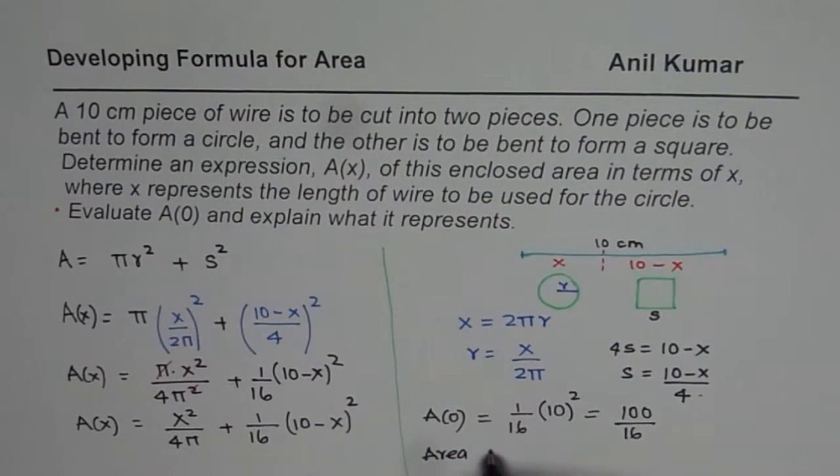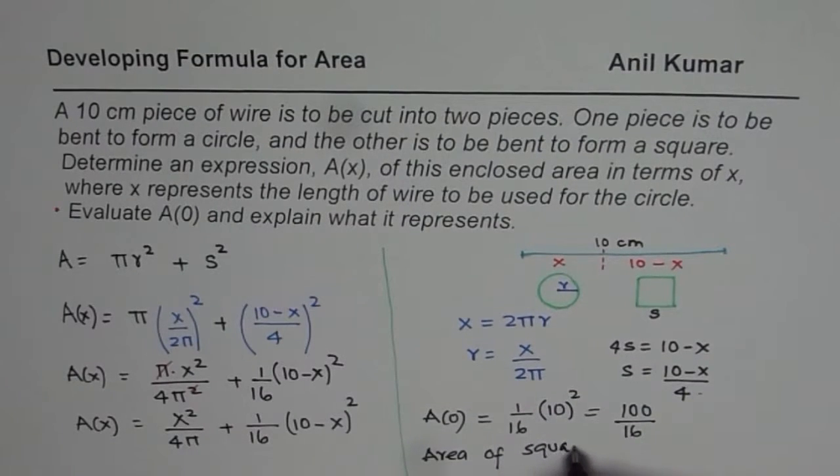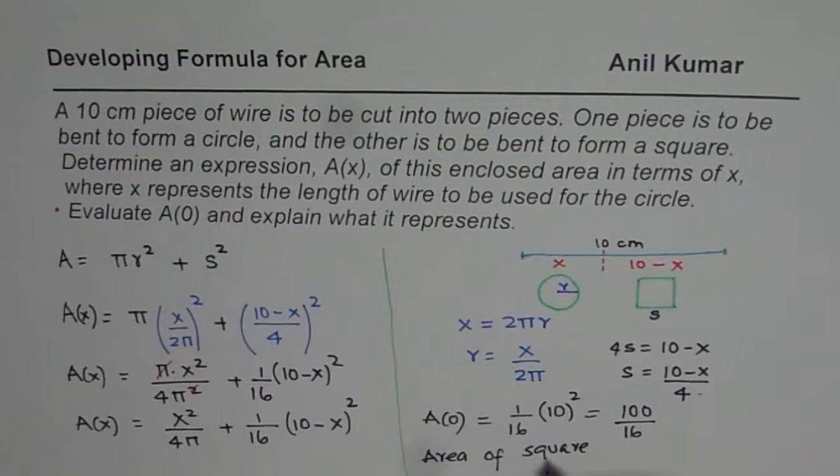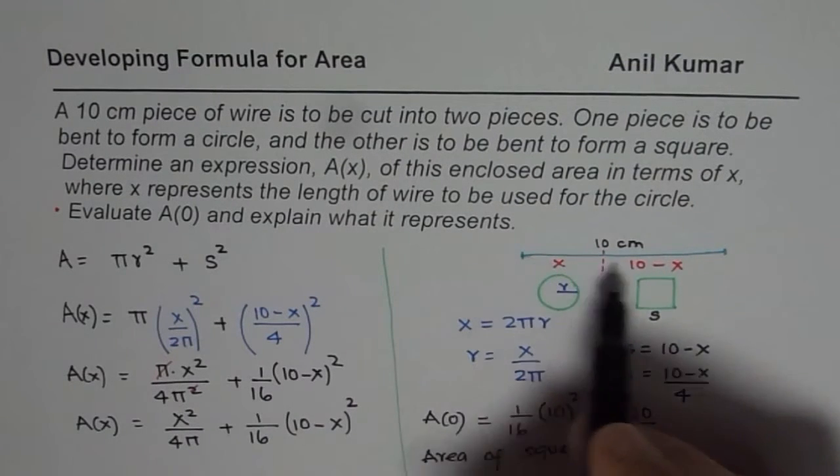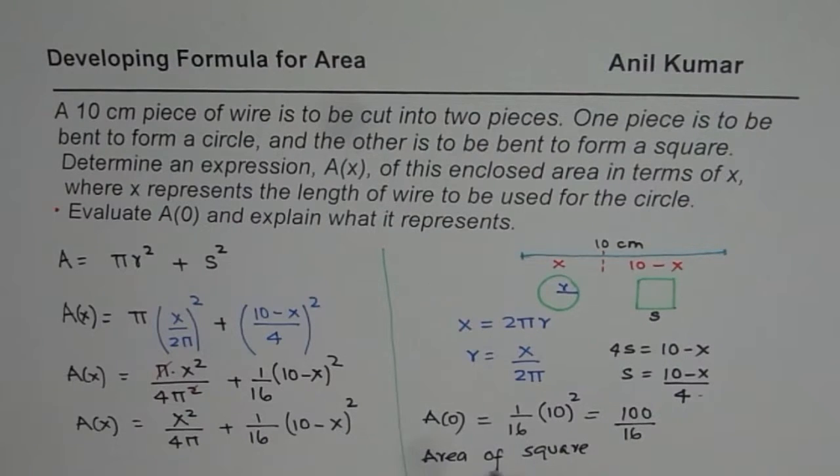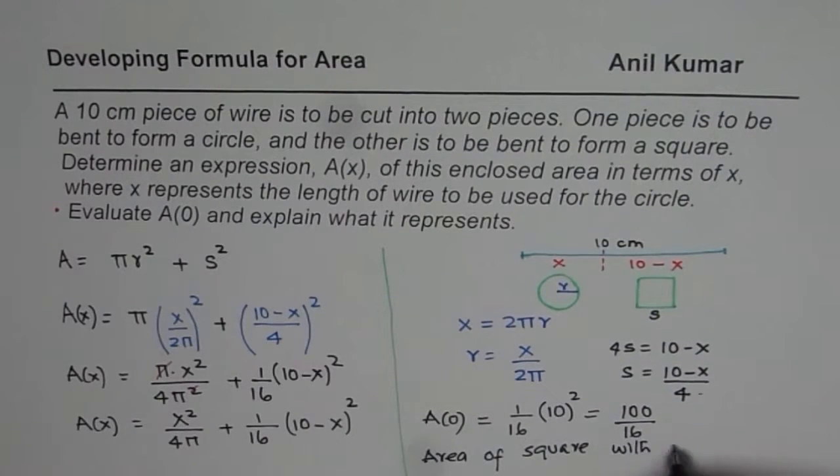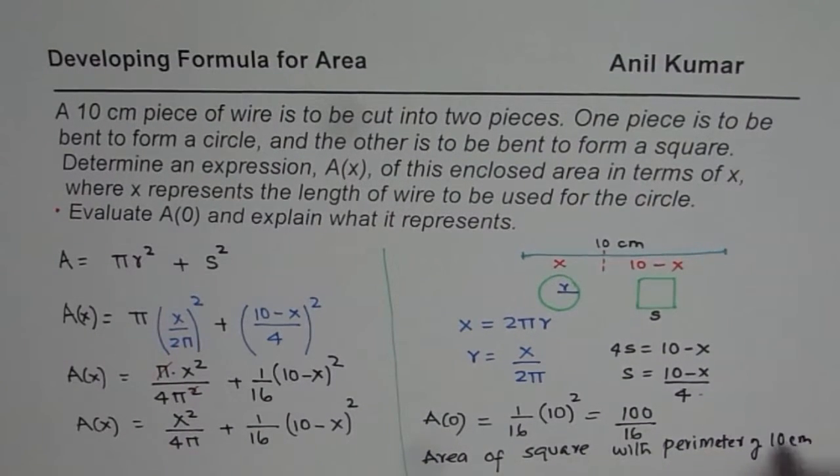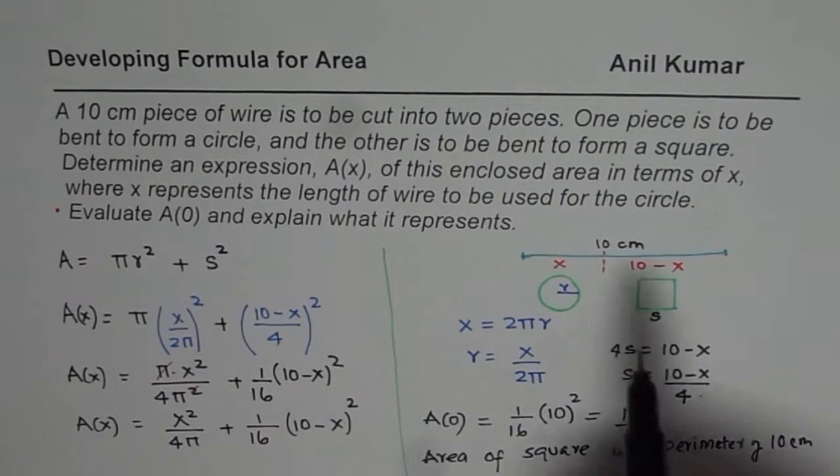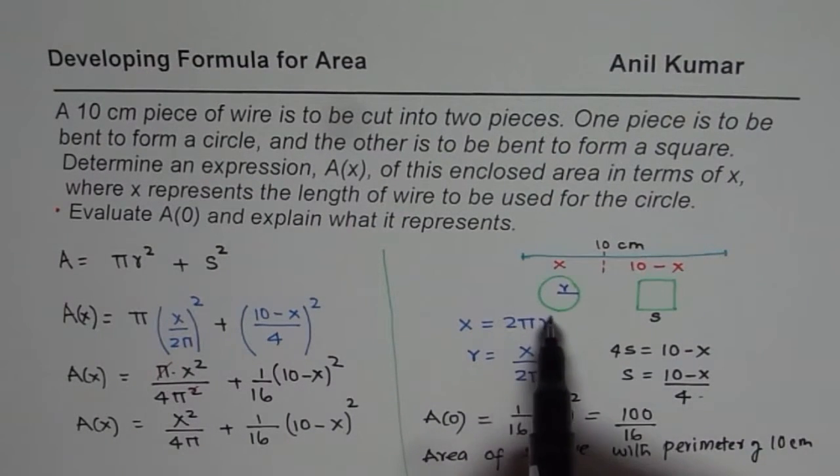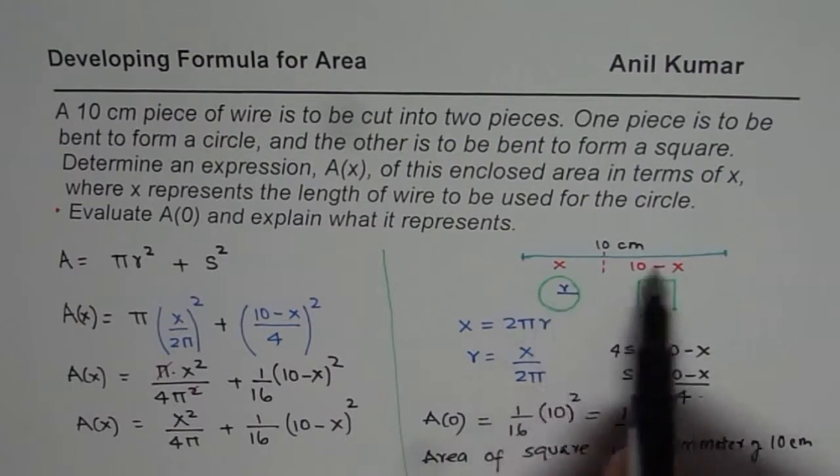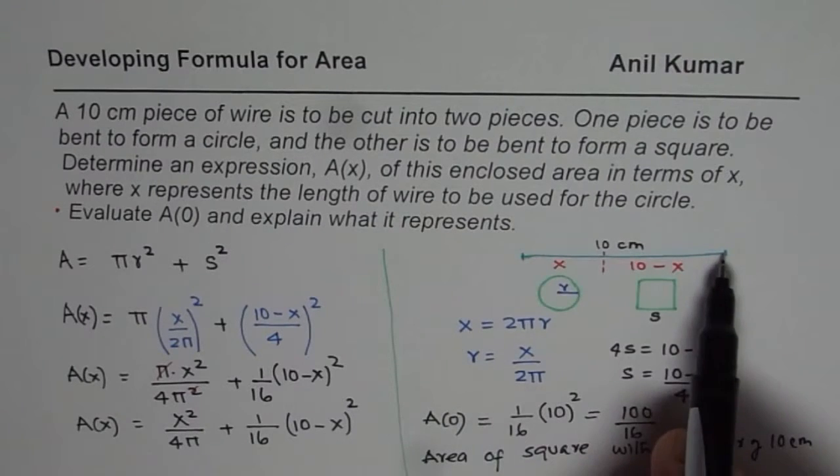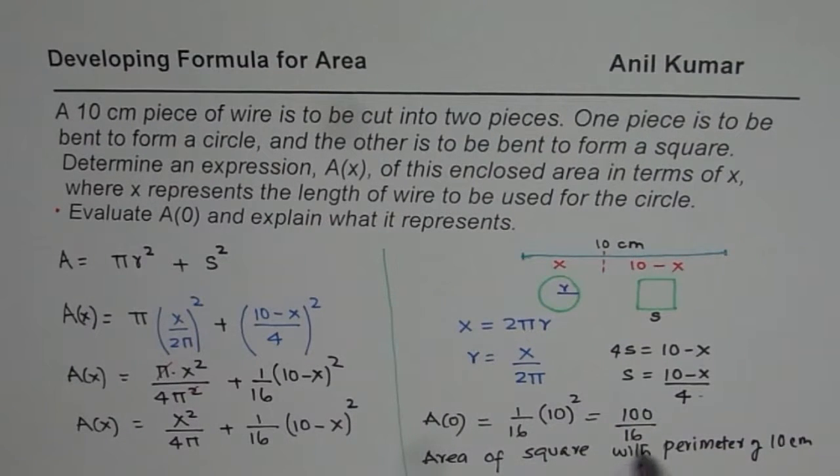And this signifies area of square where the whole length of the wire has been used. Area of square with perimeter of 10 centimeters. Because the whole length of the wire, 10 centimeters, is used for the square. And we did not use any part of this wire for circle. So if I use the whole length of wire for square, that is the area which you will get. You can always simplify this into simpler terms or write it in decimals as per your wish.